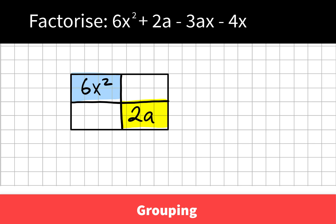Now the other diagonal must contain the other two terms. It makes no difference which one you place where. So I'm going to put the negative 3ax here and the negative 4x here.